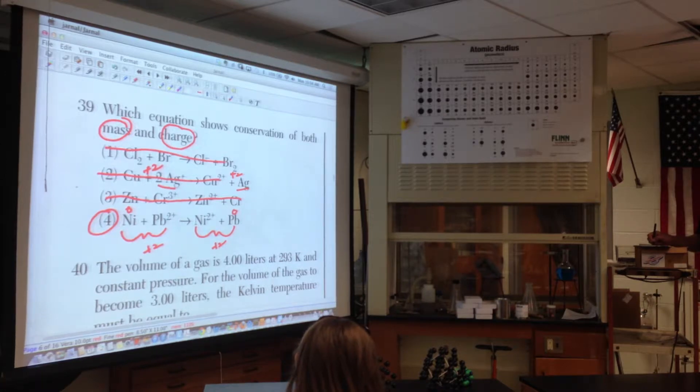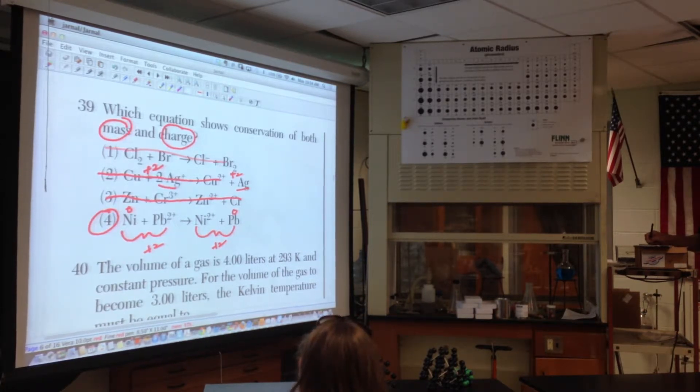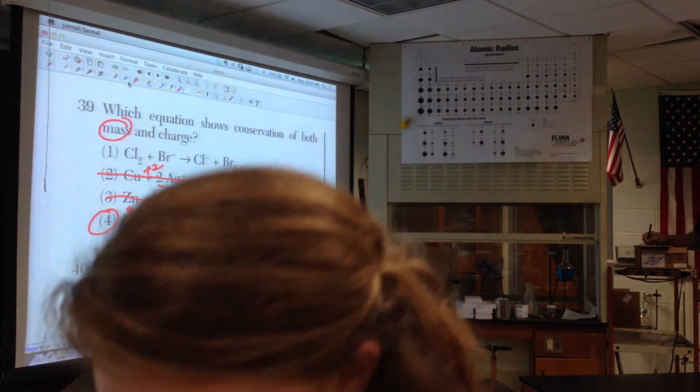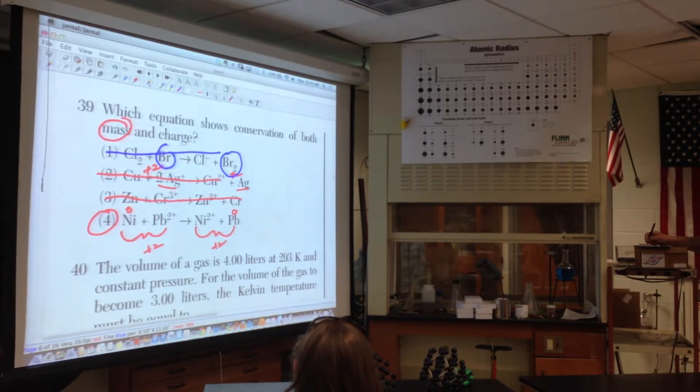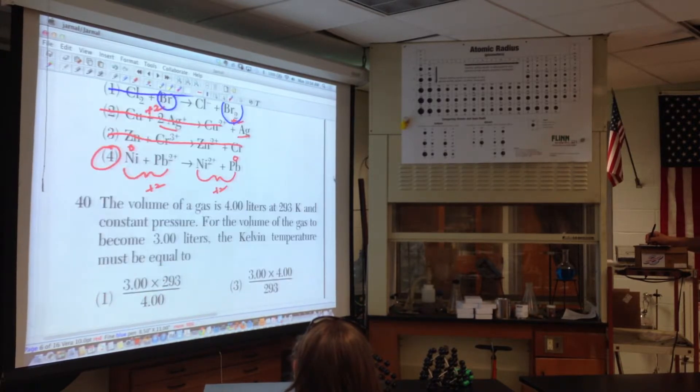Plus three on this side. Plus two on this side. Last one. Plus two on this side. Plus two overall on this side. Remember, the stand-alone elements, protons equal electrons, are zero. And notice there's one nickel, one nickel, one lead, one lead, or mass.